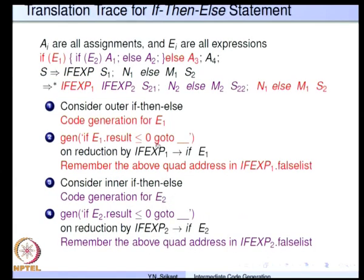Now let us look at the translation trace of the if-then-else statement — how exactly the various back-patch and gen statements are executed during LR parsing and reduction. Our example is: if E1 then (nested if E2: A1 else A2) else A3, followed by A4 as a separate statement. Let us see a partial derivation: S derives if-x S1 semicolon N1 else M1 S2, where if-x derives if E1 and S1 is the inner if-then-else.